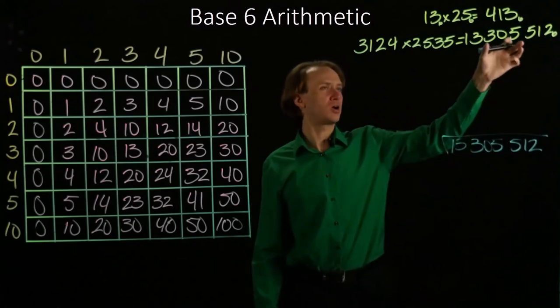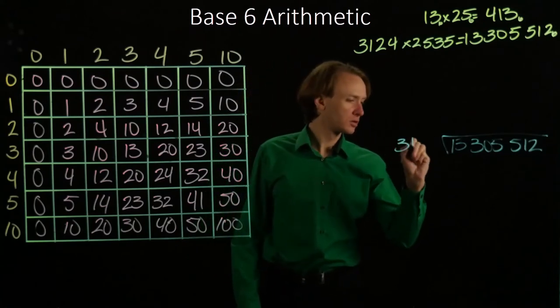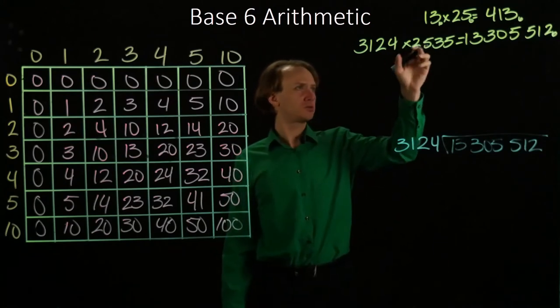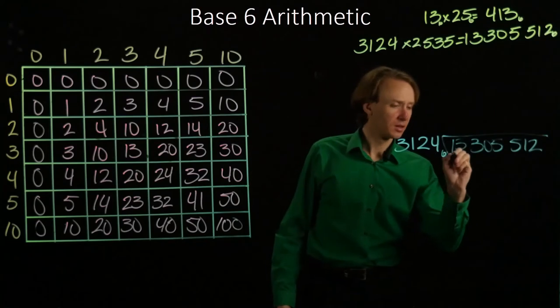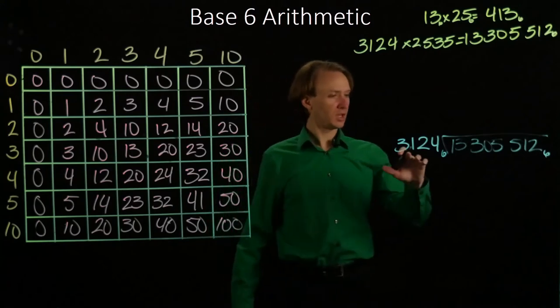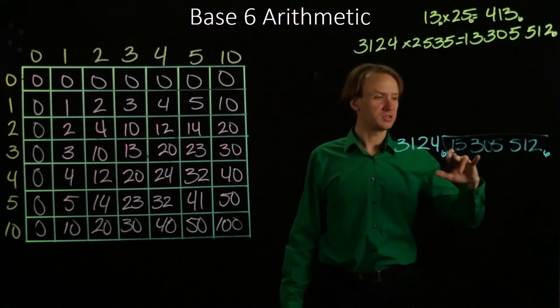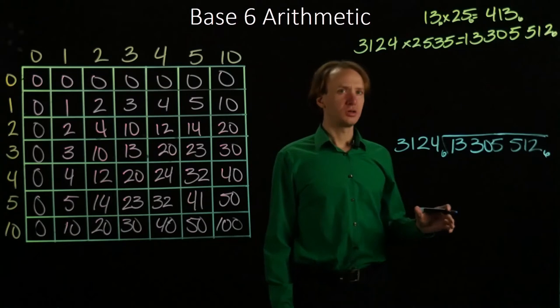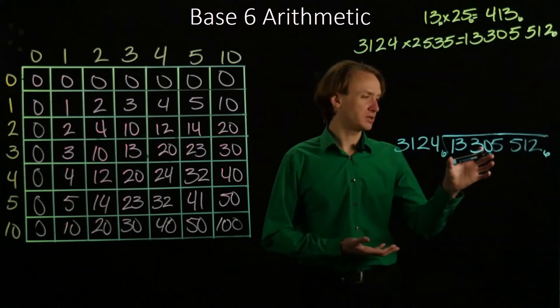So I'm going to start with our product, and I'll divide it by, say, 3124. Now again, we know it should go in 2,535 times, but we're going to pretend like we don't know that. So 3124 has 4 digits in it. It's not going to divide into anything smaller than another 4-digit number. So I won't have to consider doing any real division until I get at least 4 digits on the right-hand side.